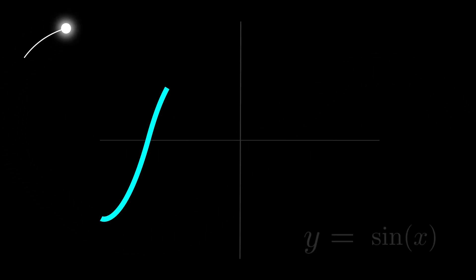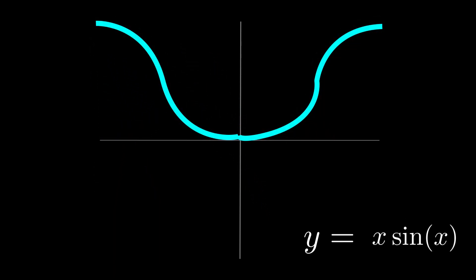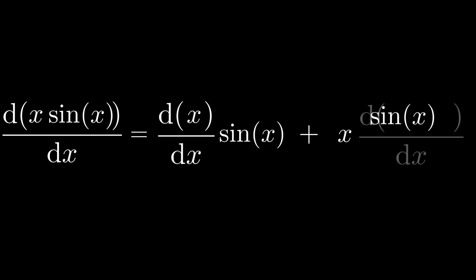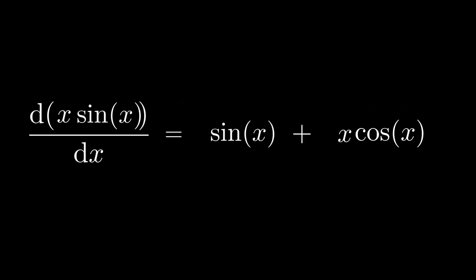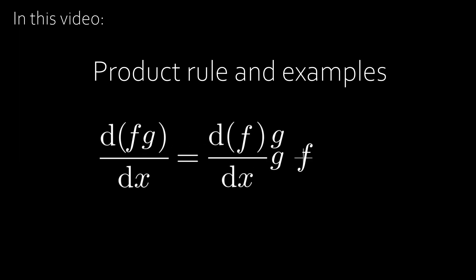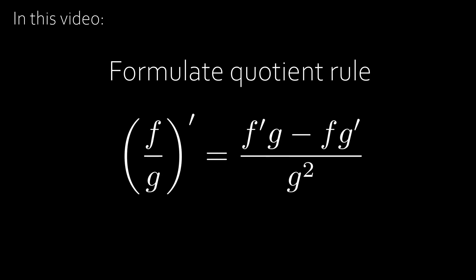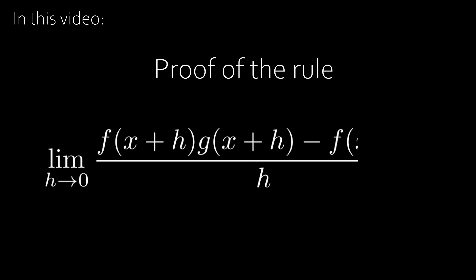The product rule is one of the most useful tools for differentiating functions multiplied by other functions, where the derivative can be found by the derivatives of the individual functions, opening up a whole host of possibilities for differentiation. In this video we will go through the rule, apply it to different examples, formulate the quotient rule which helps us find the derivative of the division of functions, and finally prove the product rule.